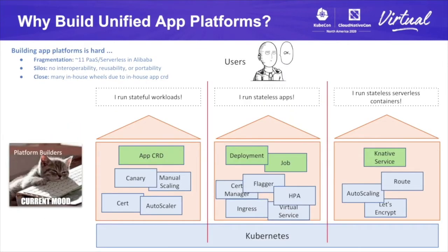If we look at these three different products, we notice they have a lot in common — canary deployment, auto-scaling, ingress, etc. But why do they have to redo all those features themselves? We believe that's because people tend to map their Kubernetes APIs directly to user interfaces. In this process of creating a very opinionated template or schema, they eliminate the possibility of reuse, because people notice a feature belongs to a specific pipeline and they don't need that user experience. So everyone is reinventing the wheels, which creates fragmentation and causes silos.